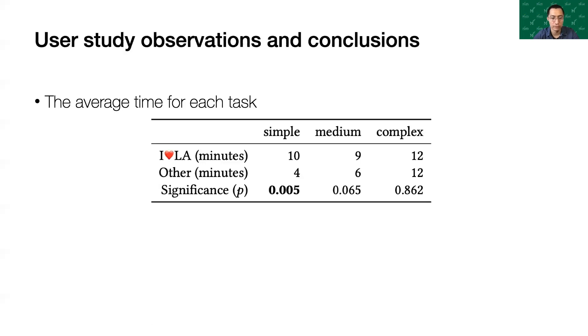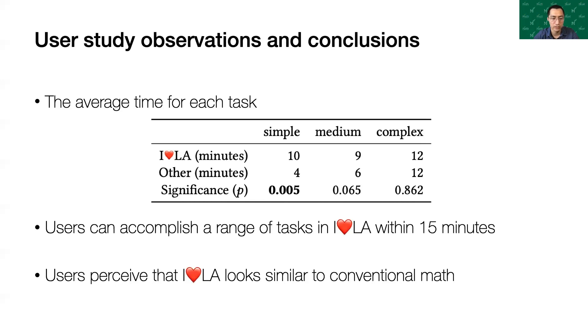We also compared the time it took participants to implement formulas using I❤LA and other languages. Users can accomplish a range of tasks in I❤LA within 15 minutes. I❤LA needs more time for the simple and medium tasks, but almost the same time for the complex tasks. We find this extremely encouraging, given that we compared their first exposure to I❤LA to their preferred languages. Users perceive that I❤LA looks similar to conventional math.